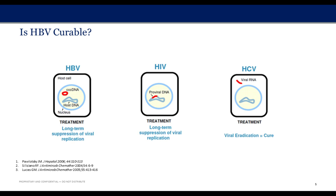Hepatitis B, in contrast, is not like Hepatitis C or HIV — though probably a little more similar to HIV than Hep C, as it does have a reservoir in the patient hepatocyte in the form of a covalently closed circular DNA molecule, a pseudo-chromosome that remains in the nucleus and is difficult to eradicate.